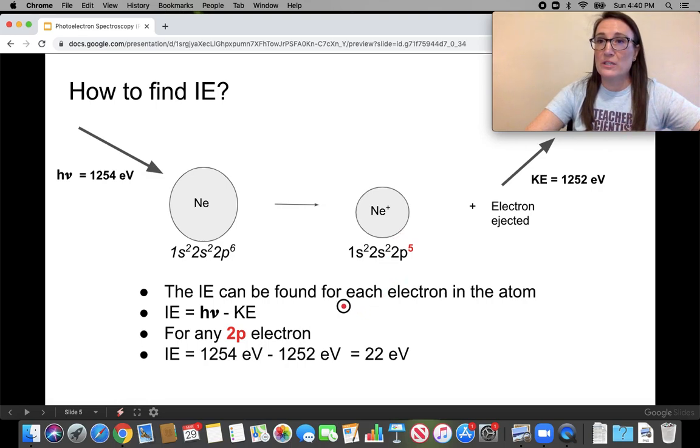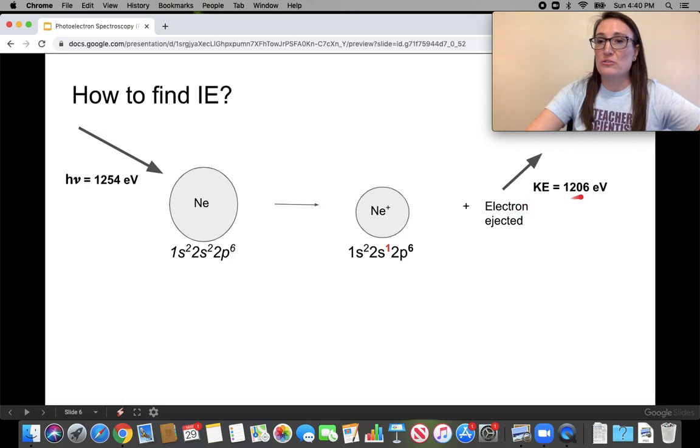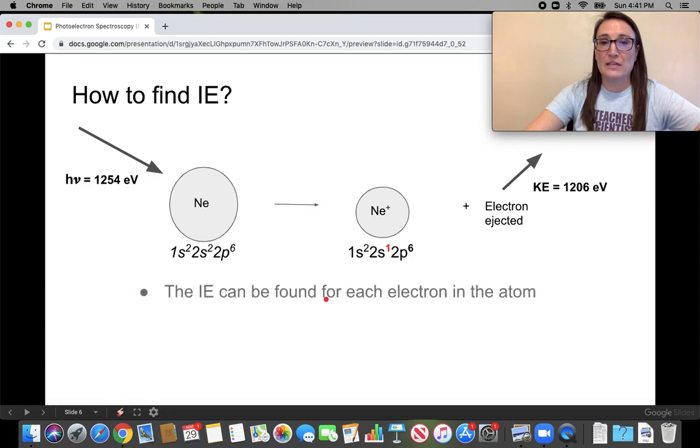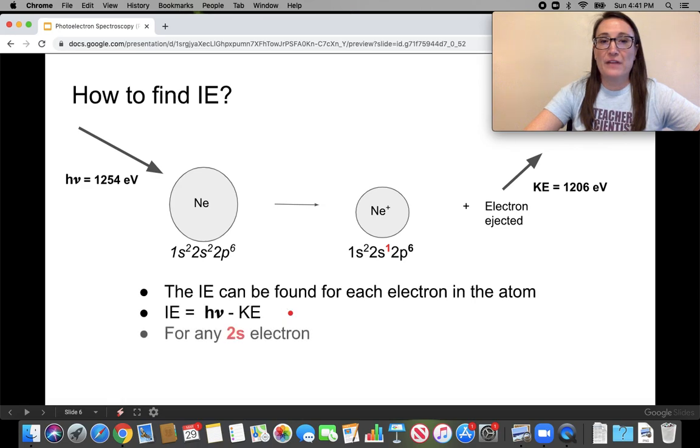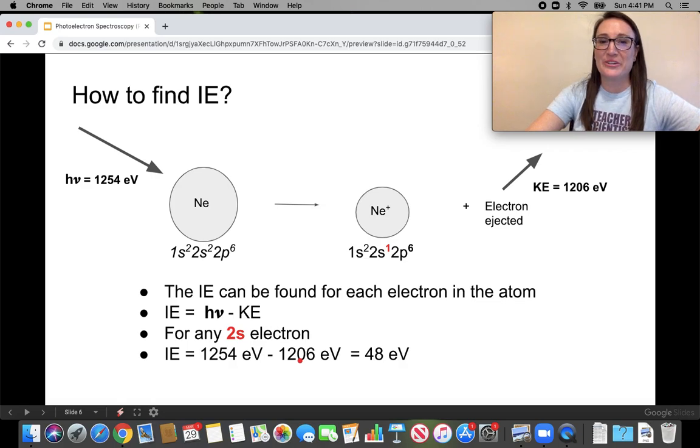All right, what's one more type of energy? 1,206 electron volts of kinetic energy could also be measured. That's going to be assuming that those are the s electrons for the 2s. We can then find the binding energy of the 2s electrons by subtracting the energy in, which is the 1,254, subtract the 1,206, and you get 48, which proves that again s electrons are more tightly bound.